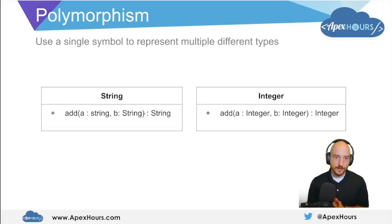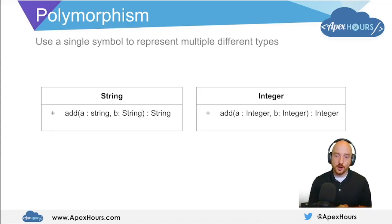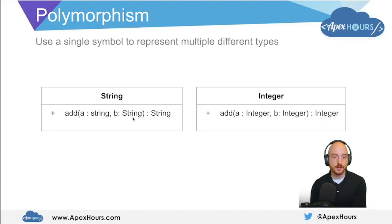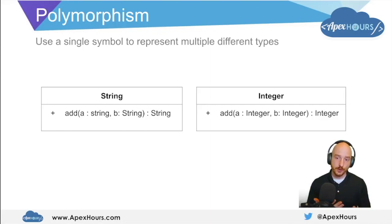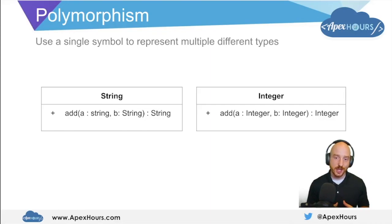Next is polymorphism. This enables us to use a single symbol across multiple different types. For example, we could have the string class and add two strings together using the add method, or have the integer class where we add two integers together using the add method. Polymorphism enables the programming language to understand that add on a string is different than add on an integer, but we can reuse that add method name across multiple types and give each a meaning specific to the data type we're representing.